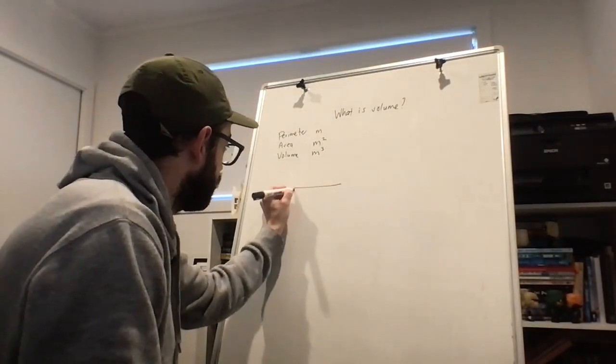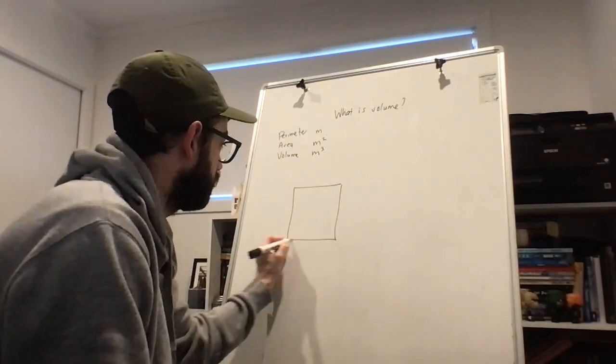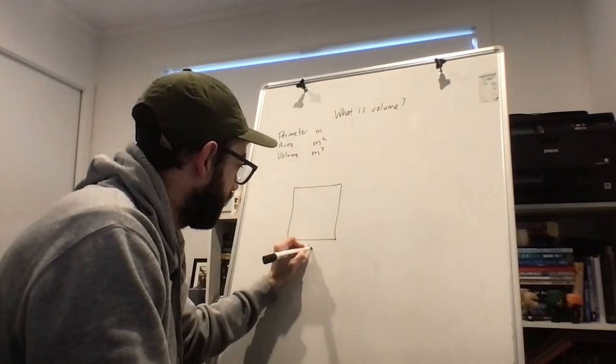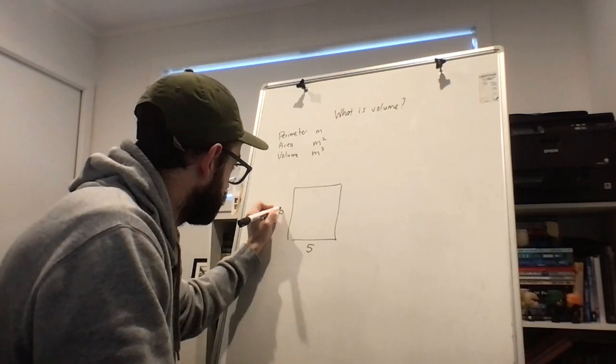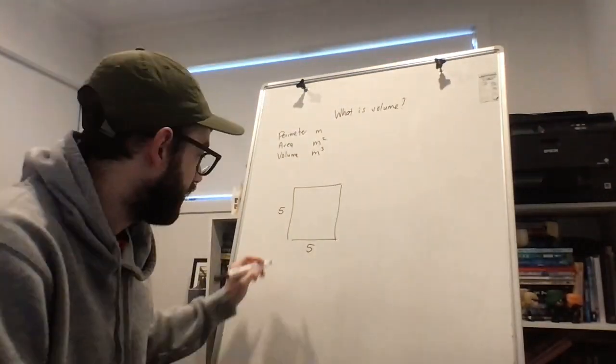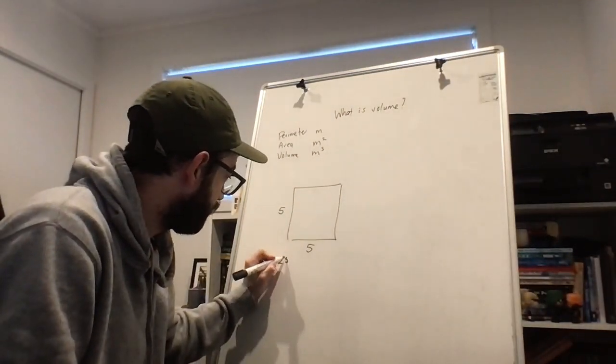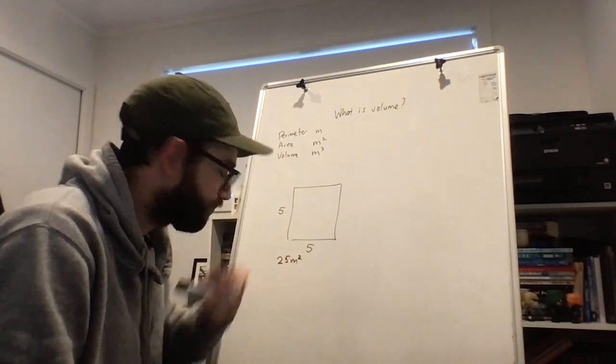So for example, here is a square. Say we looked at the area of this square, so it was five by five. The area would be 25 meters squared.